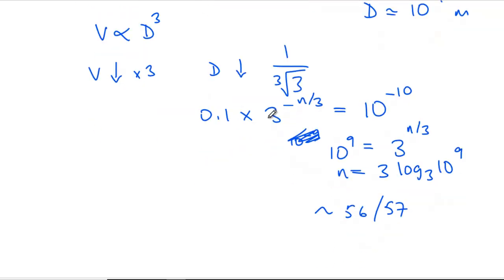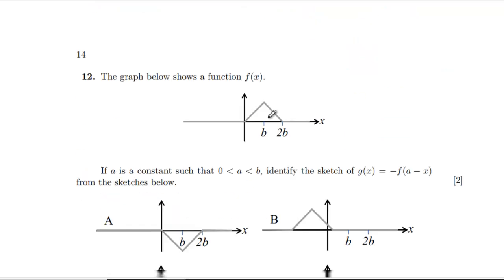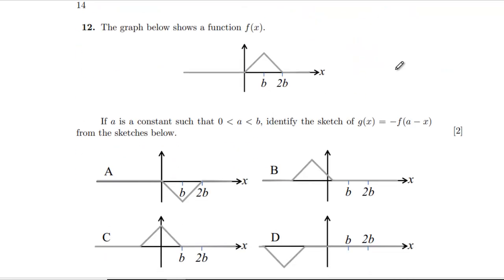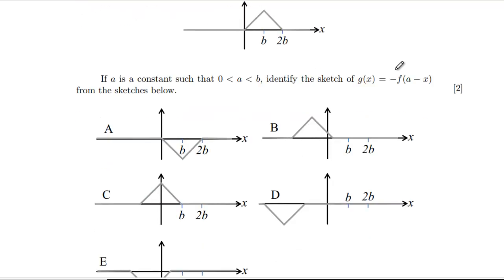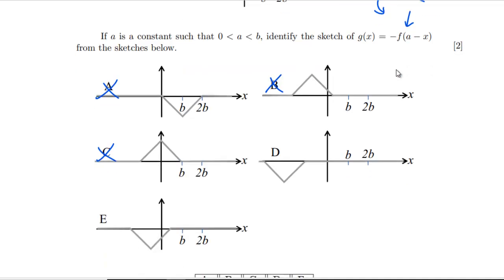The last one then, question 12. The graph below shows a function f of x. If a is a constant such that a is less than b but greater than 0, identify the sketch. So we have to end up being, well, we've got a shift in the x direction and we've got a reflection in the y direction. That's already going to rule out that one, that one, and that one. So we've got a choice between D and E really, because they're the only ones that fit in with that.